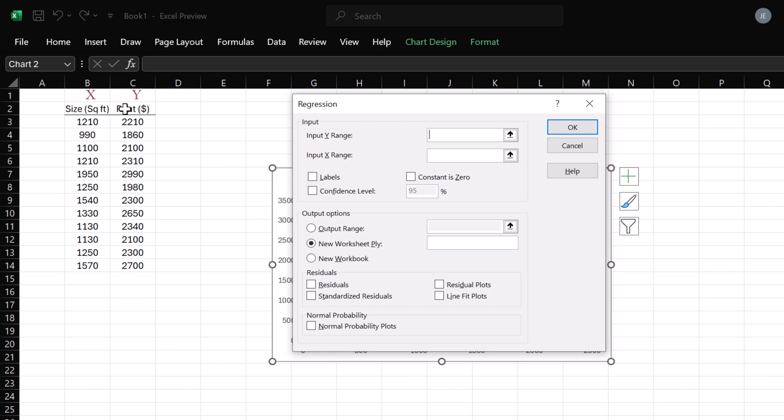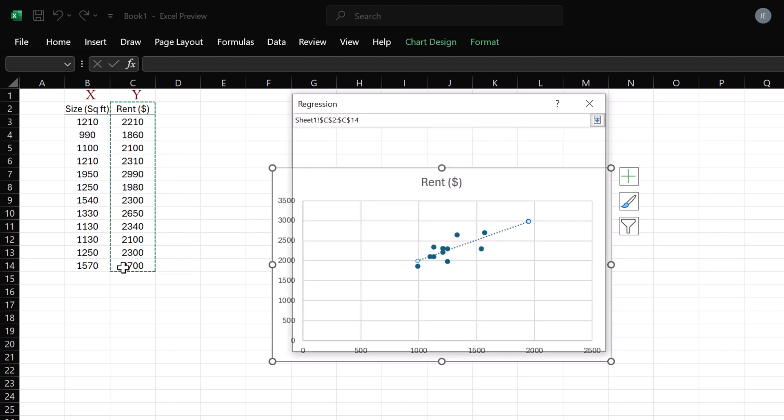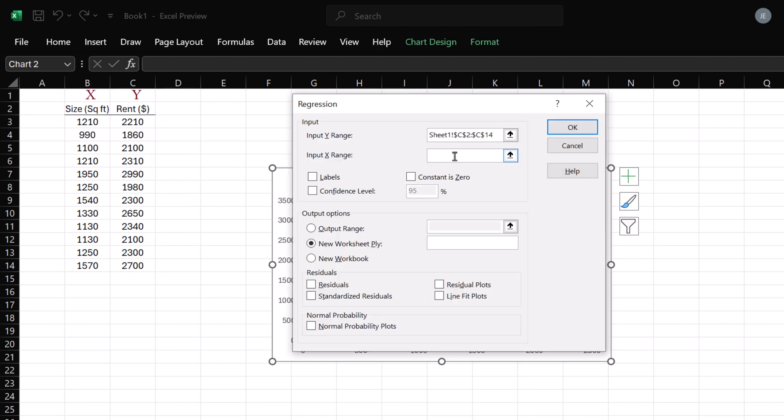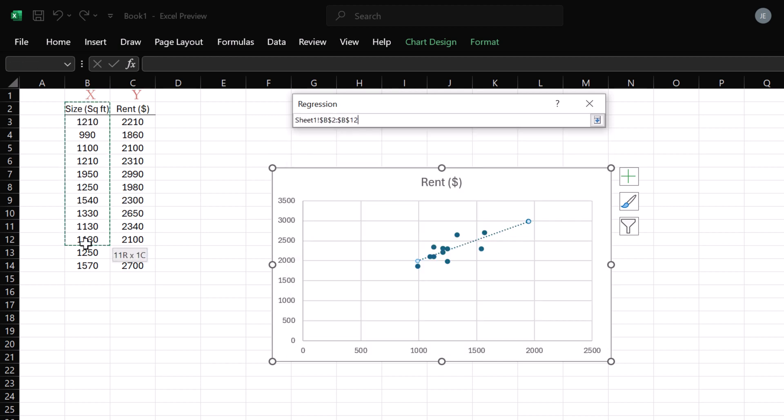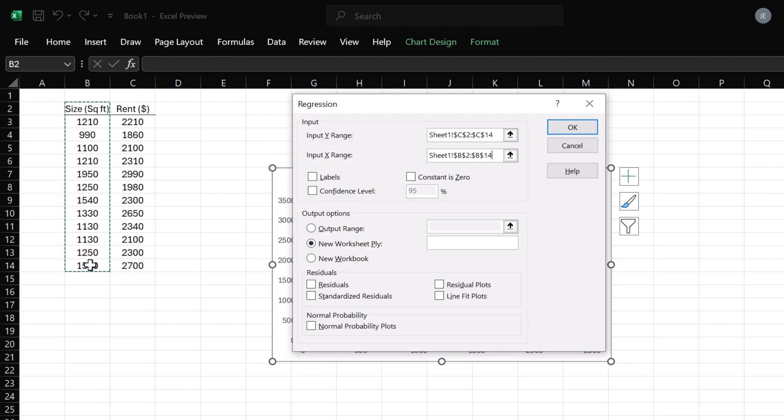For input Y range, select the dependent variable data. For input X range, select the independent variable data. I'm going to check Labels because I included the titles in the selection. If I want residual output, I can select any of these boxes here. But I'm just going to click OK.